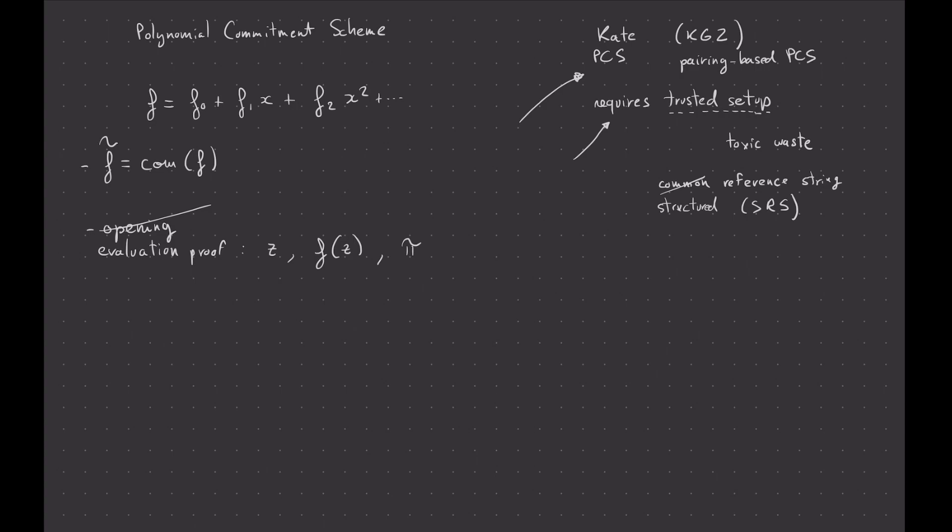And it means that you have to deal with pairings, which might be a bit annoying, but it creates for very, very short proofs. Interestingly, in Mina, in the Mina cryptocurrency, and also in Halo, which I believe is what Zcash is going to use at some point in the future,